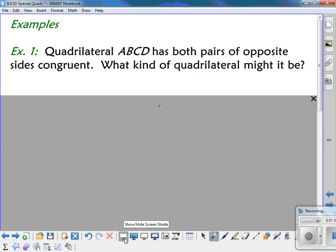For example one, quadrilateral ABCD has both pairs of opposite sides that are congruent. So what kind of quadrilateral could it be? Well, it's not going to be a trapezoid, because my bases aren't congruent on a trapezoid.